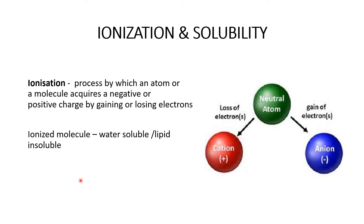We must know what ionization is and what happens to the solubility of an ionized molecule to understand the equation better. Ionization is a process by which an atom or a molecule acquires a charge — either negative or positive — by gaining or losing electrons. When a neutral atom gains an electron it becomes a negatively charged anion, and when it loses an electron it becomes a positively charged cation.